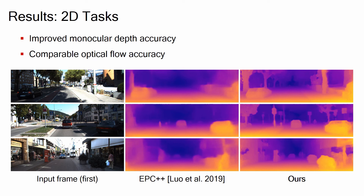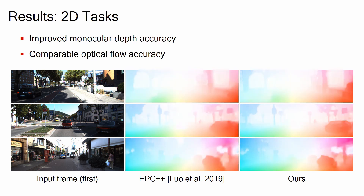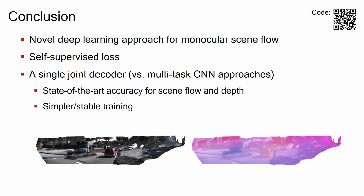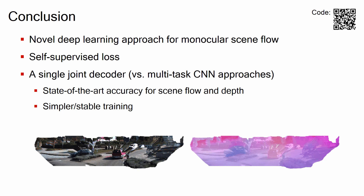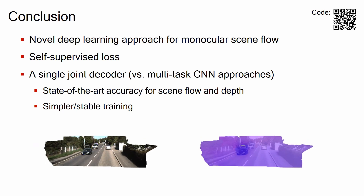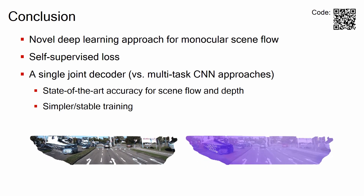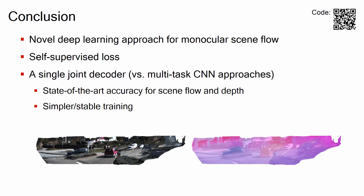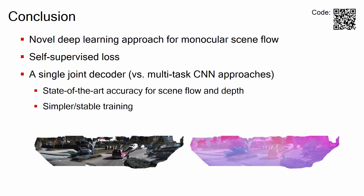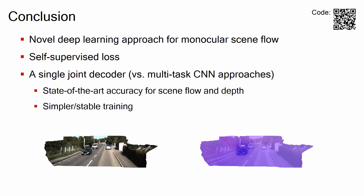We also evaluate our model on depth and optical flow estimation. Comparing to multi-task approaches that focus on these tasks, our model yields improved monocular depth accuracy and comparable optical flow accuracy. This suggests that our method can also simplify existing multi-task methods. In summary, we propose a novel end-to-end approach for monocular scene flow, taking a self-supervised approach and proposing a novel 3D loss function with occlusion reasoning. Comparing to existing multi-task approaches, our single joint decoder model substantially boosts accuracy with simpler and stable training. Our code is publicly available.